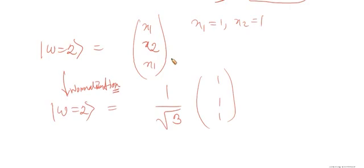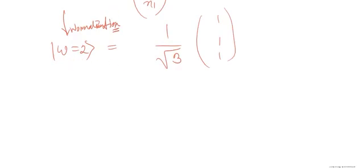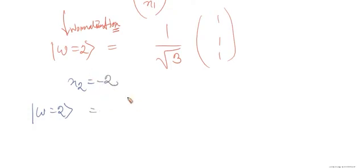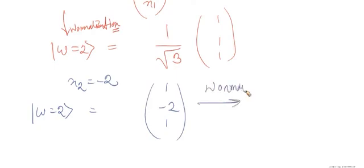Since x2 is arbitrary, we can choose a different value. Let's say x2 = -2, keeping x1 = 1. This gives the vector [1, -2, 1], and after normalizing: (1/sqrt(6)) * [1, -2, 1]. So a different choice of x2 yields a completely different eigenvector, still corresponding to omega = 2.